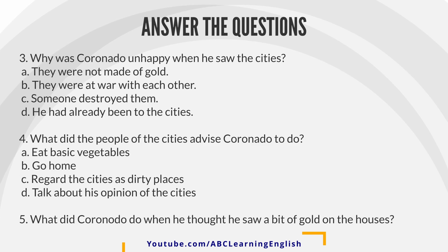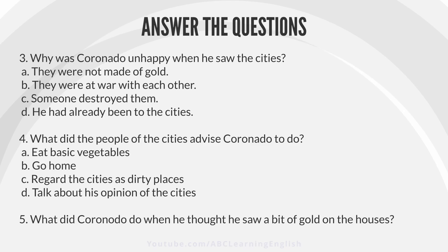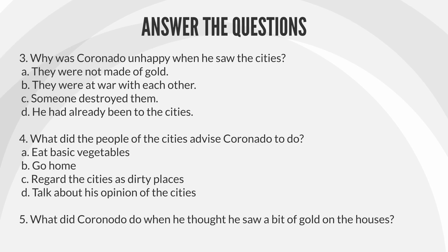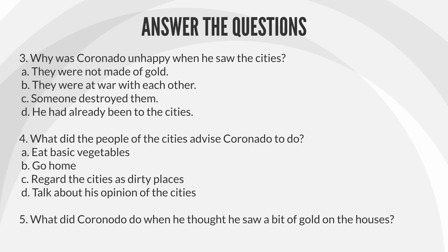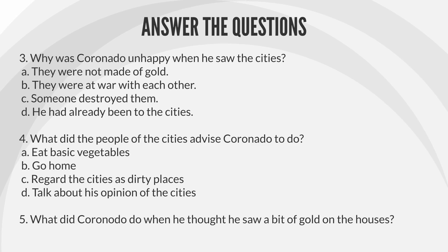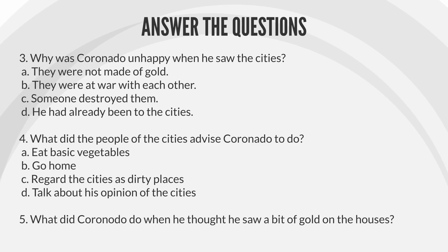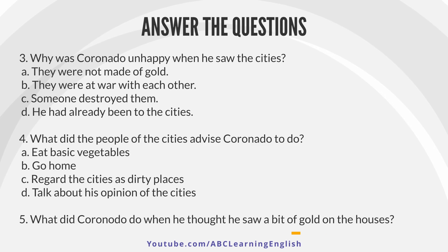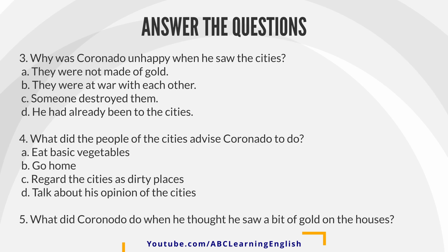4. What did the people of the cities advise Coronado to do? A. Eat basic vegetables. B. Go home. C. Regard the cities as dirty places. D. Talk about his opinion of the cities.